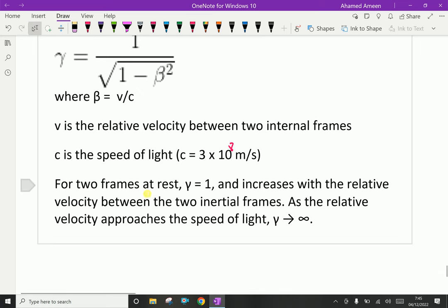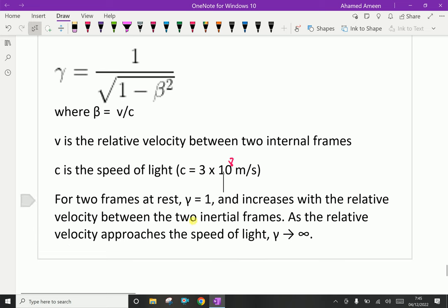For two frames at rest, gamma is one. That means if a body is not moving, the gamma is one because both are at rest. Here at rest means that body is not moving, meaning v is zero, beta is zero. So one over one equals one.